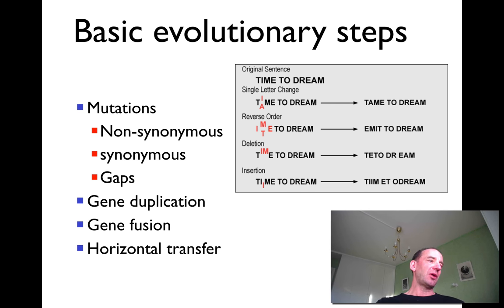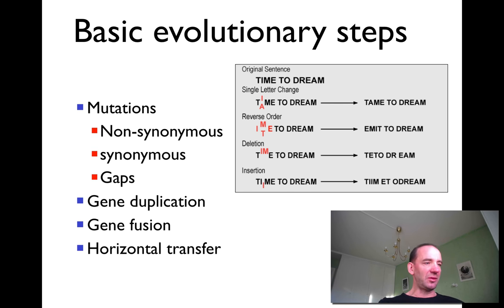We also have other types of mutations. We have gene duplications, insertion gaps, gene fusion — which means that genes can move together — and also horizontal gene transfer.